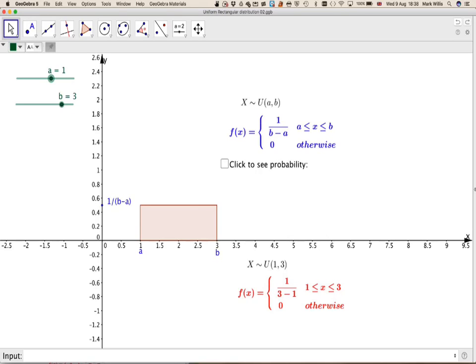We know that the format of a continuous uniform distribution is 1 over b minus a, between a and b. So this one we got is 1 over 3 minus 1, so it's 1 half between a equals 1 and b equals 3, and 0 otherwise.